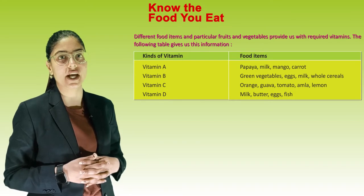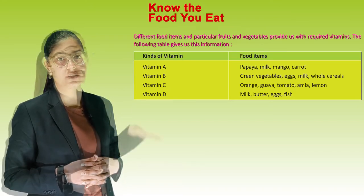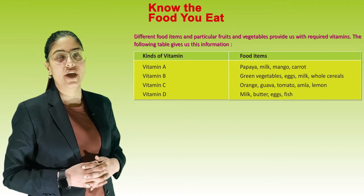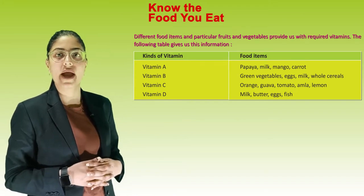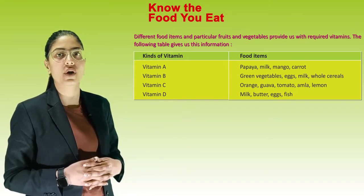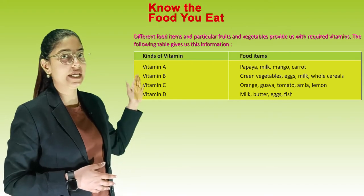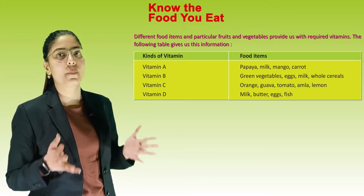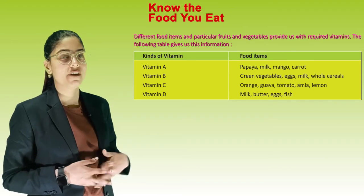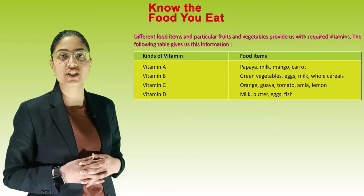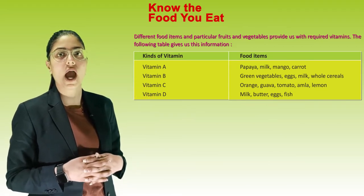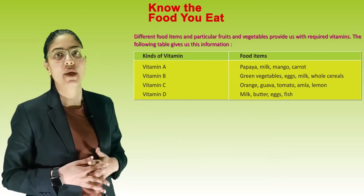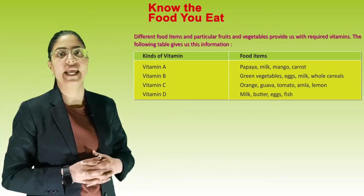The following table gives information on types of vitamins and their food items. Vitamin A: papaya, milk, mango, carrot. Vitamin B: green vegetables, eggs, milk, whole cereals. Vitamin C: orange, guava, tomato, amla, lemon. Vitamin D: milk, butter, egg and fish.